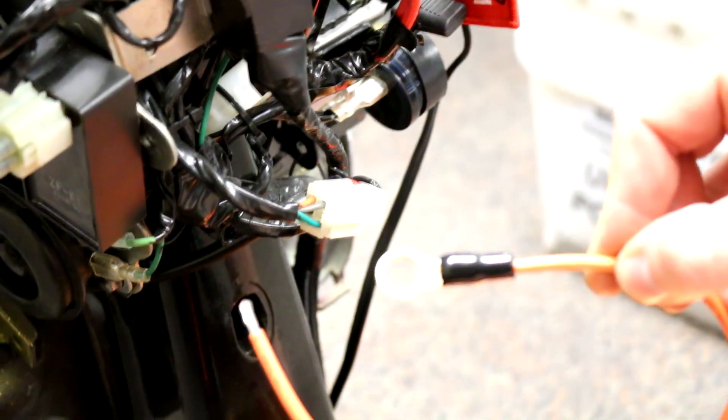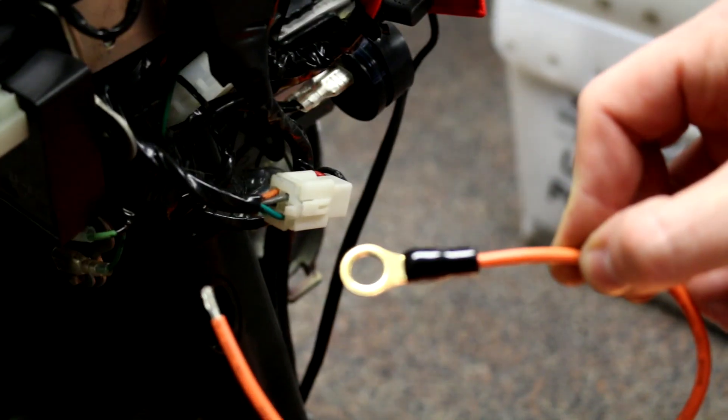So you're going to take a piece of wire like so. You want to make sure that you have a fuse for it. With this one, we have an open end and then we also have an eyelet. So you would take this open end and you would tap it into the red wire, either before or after the clip.